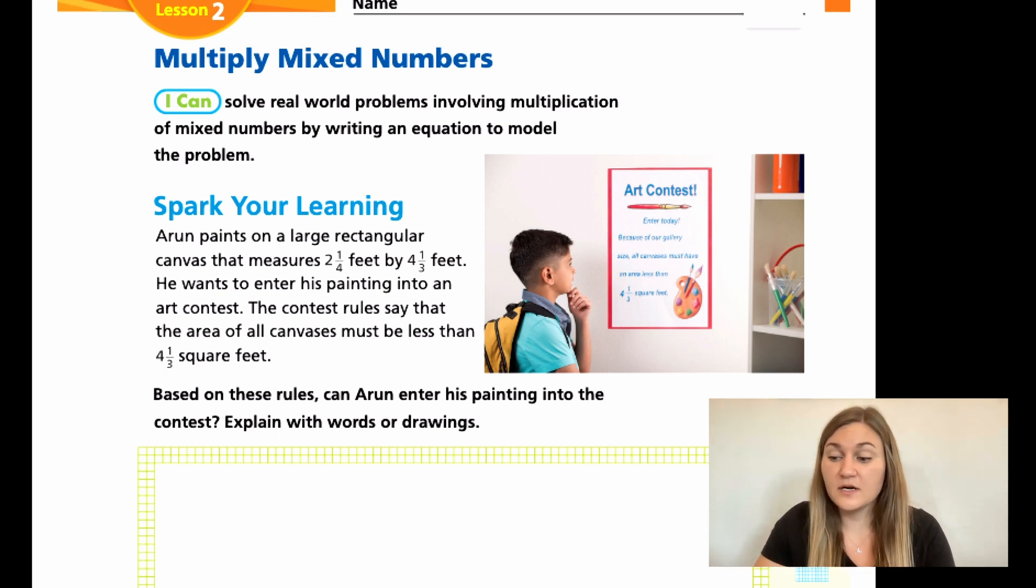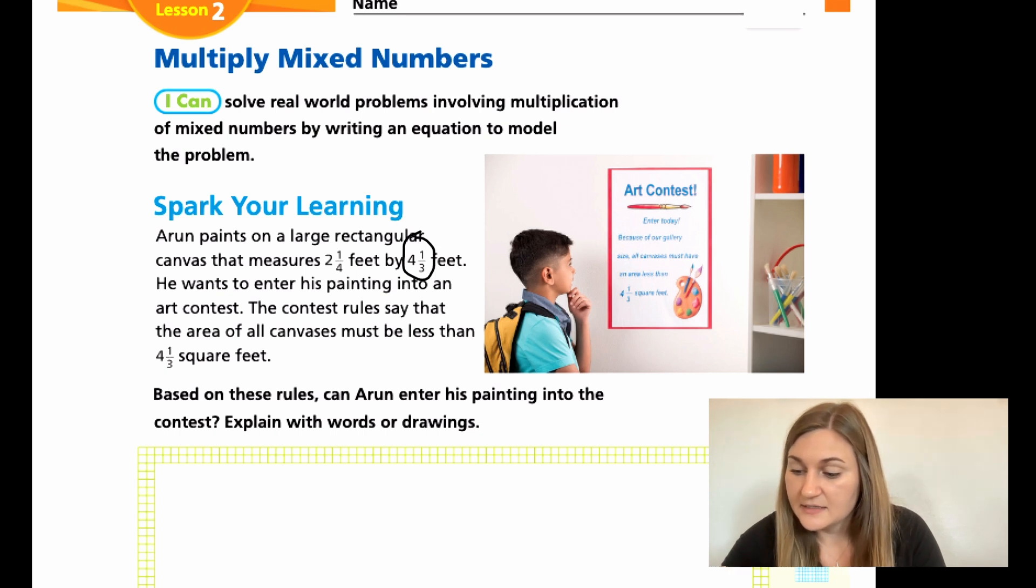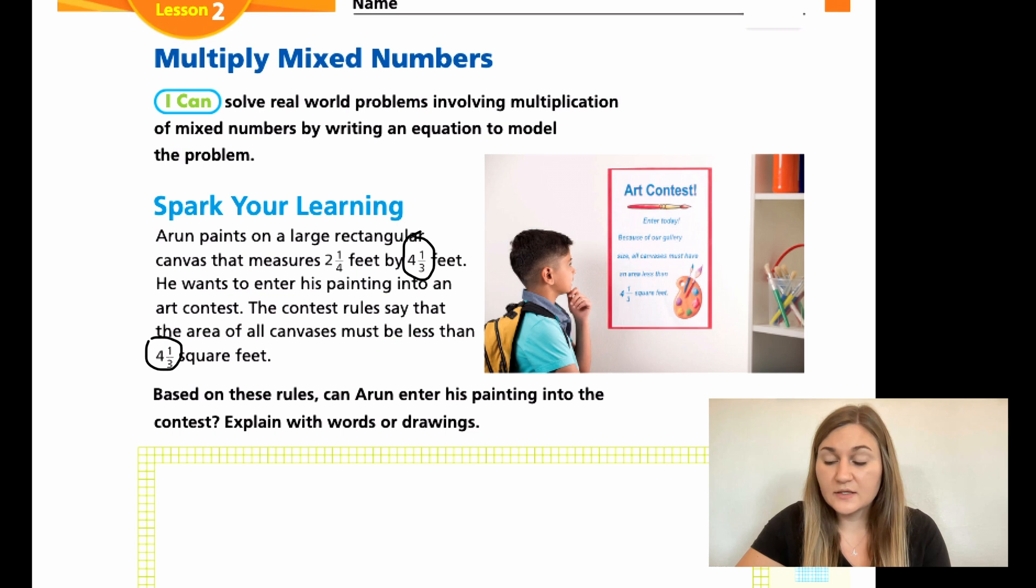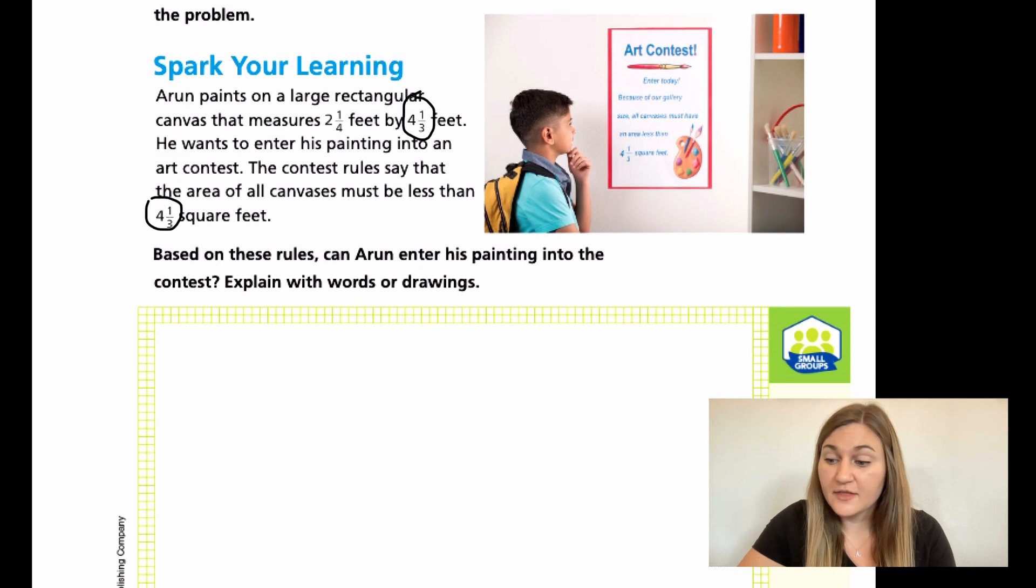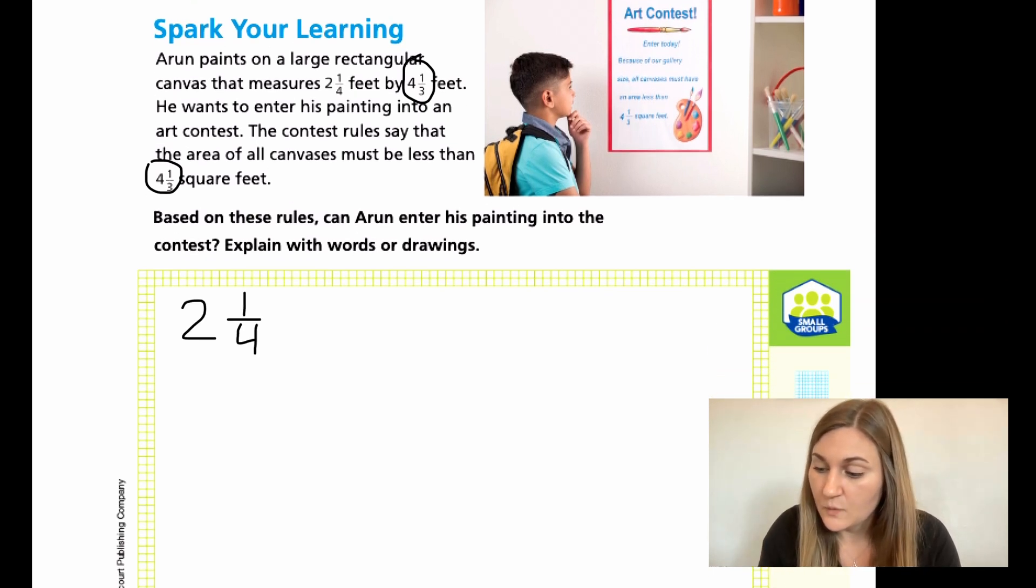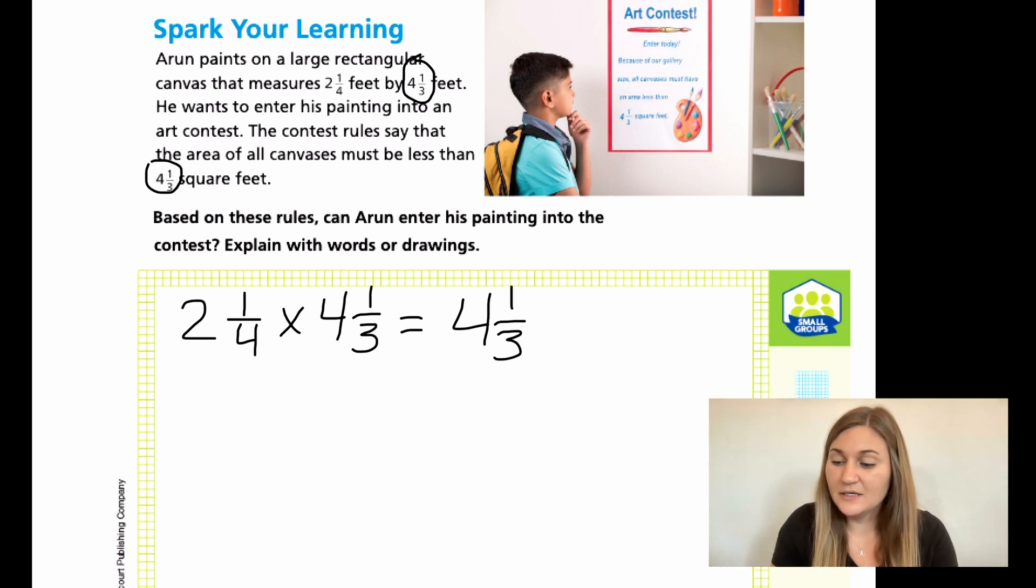Okay, so the first thing I notice is that 4 and 1/3 shows up here and here. And from lesson 1, we learned that the area is length times width. So for my measurement of the canvas, it would be 2 and 1/4 times 4 and 1/3. But in order to enter his drawing into the contest, it would have to equal 4 and 1/3. Now, I know that this 2 and 1/4 is definitely bigger than 1. So I'm thinking his painting is just too big. Without doing any work, just looking at the numbers, I can't have 4 and 1/3 be my answer unless the other number is 1 and keeps it the same. So unfortunately, Aaron can't enter that canvas into this contest.